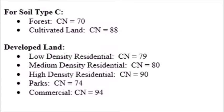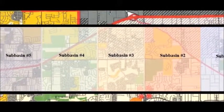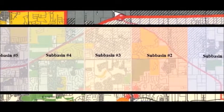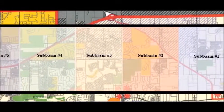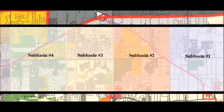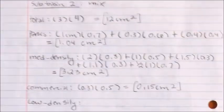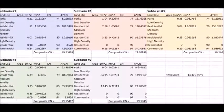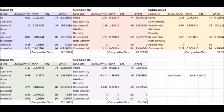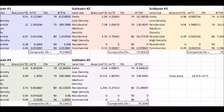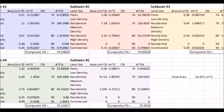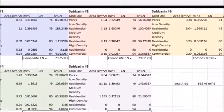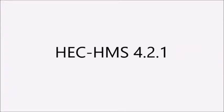The next step was to determine the composite curve numbers. In order to determine this, I broke the designated area into five separate sub-basins. I measured the area of each different land use in each different sub-basin. Once I finished with this, I inputted the data into Excel. Once in Excel, I calculated the composite curve numbers for each sub-basin.